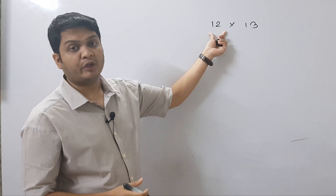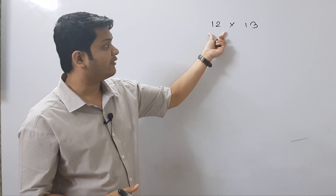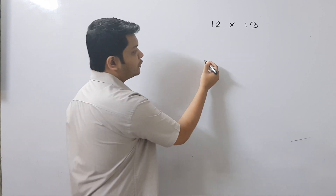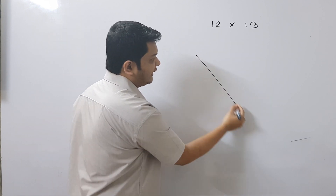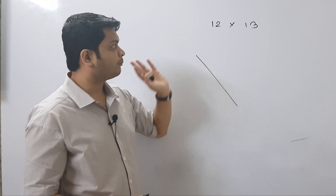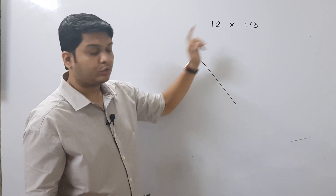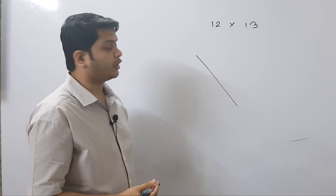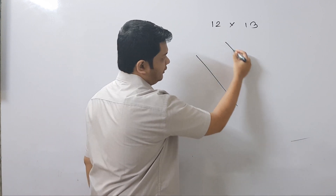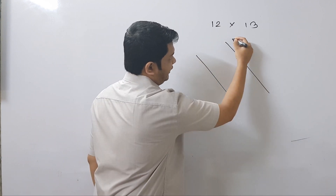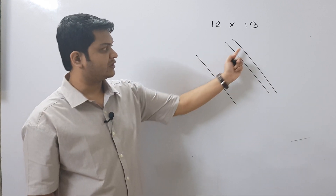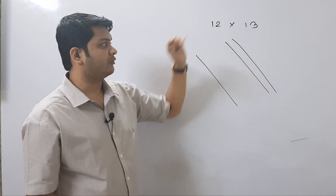So at first, start with 12. For 12 we have two digits, 1 and 2. So at first we will draw one line — this one line stands for 1 — and for 2 we will draw two more lines, but we will give some gap here. So this is 1 and this is 2. We are done with 12.